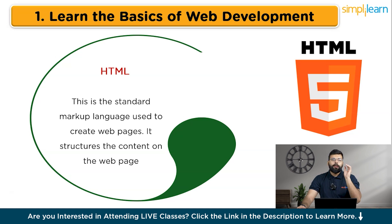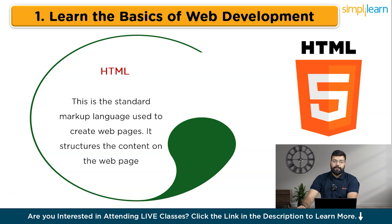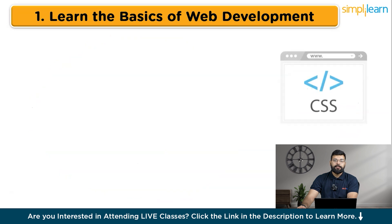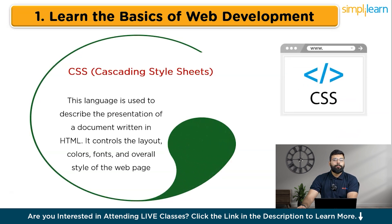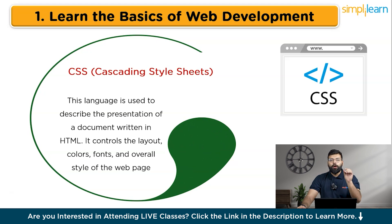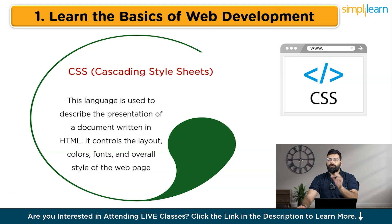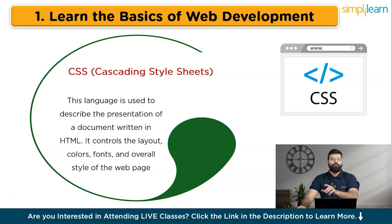For an HTML project, you can create a simple web page with headings, paragraphs, links, and images. Moving to the next technology, CSS, that is cascading style sheets — this language is used to describe the presentation of a document written in HTML. It controls the layout, colors, fonts, and overall style of the web page. You can explore how to style your HTML using CSS, learning about selectors, properties, and values, and style your HTML page by adding colors, fonts, and layout adjustments.